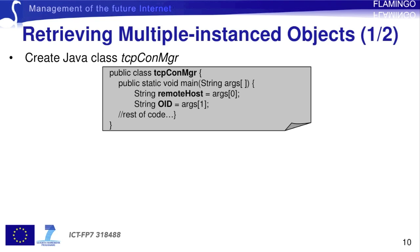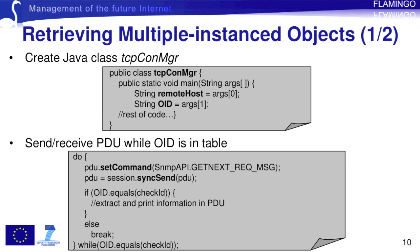First we create a Java class called tcpConManager. And as in the case of the previous exercise, the main method takes two arguments of type string. The first is the address of the remote host on which the agent is running, and the second is the OID of the table we wish to retrieve. As in the previous exercise, we create new instances of the SNMP API, session and PDU classes. We open a session with the agent and set the target OID. Next, we create a while loop in which we set the command in the PDU to a getNext request, and we keep sending and receiving the PDU using the syncSend method until we have fetched all the table entries. At each iteration, we retrieve a single table row by using the returned OID as the target OID of a getNext request. We exit the loop if the string equality comparison fails.